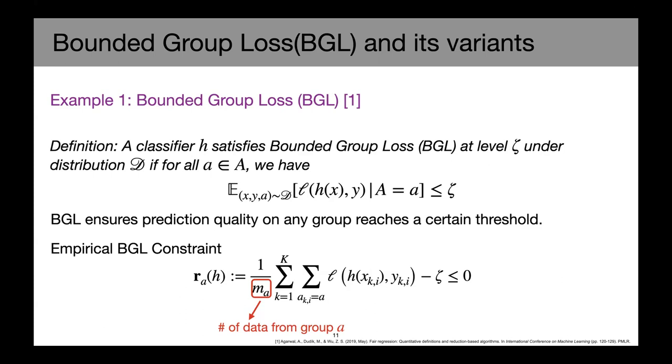And in fact, if we look at this definition, we can see that it also guarantees that any two groups loss should not differentiate by more than zeta. And we also have this empirical BGL constraint formulation, which is when we try to encode this notion, we just simply take the average of all the data coming from this group A over all the clients and subtract it by this prefix constant zeta.